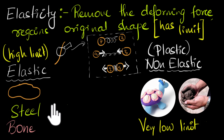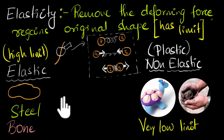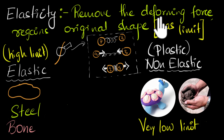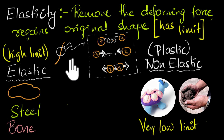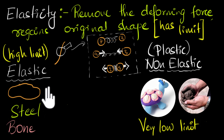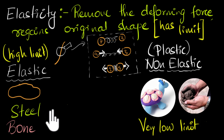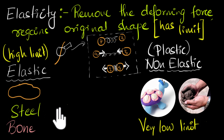The last thing we'll do is think about how we compare the elasticity of two materials — how do we check whether something is more elastic or less elastic? To do that, we'll go back to the definition of elasticity. If something can withstand a lot of deforming force and still regain its original shape, then we'll say it is more elastic. On the other hand, if something permanently gets deformed even for small deforming forces, then we will say it is less elastic.